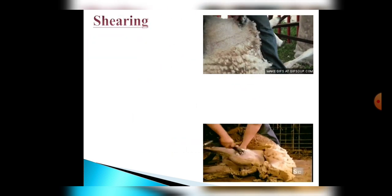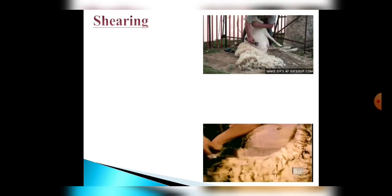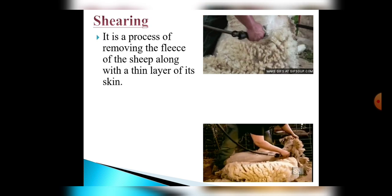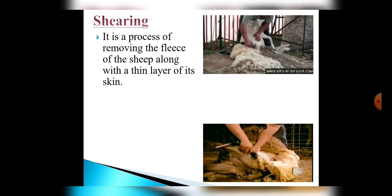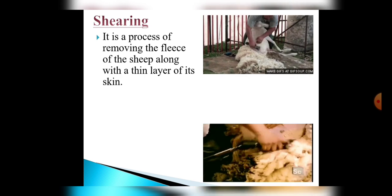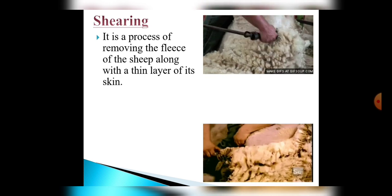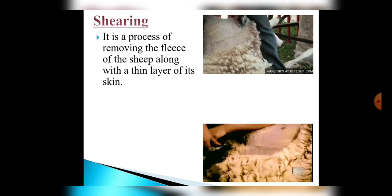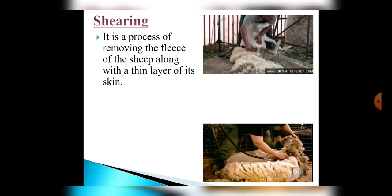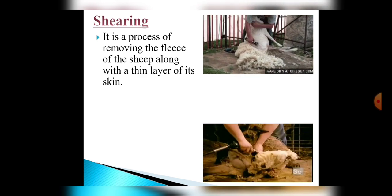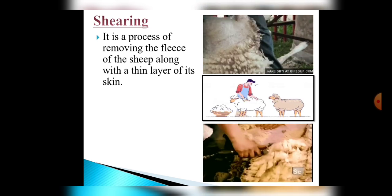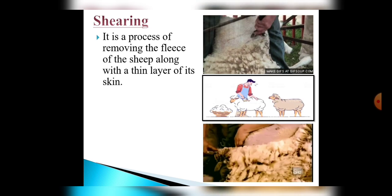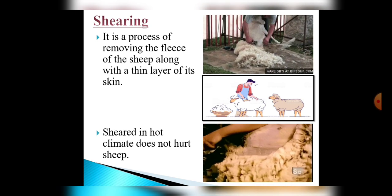The first step is shearing. As you can see in the given clip, this is the process of removing fleece of sheep along with a thin layer of its skin. In older days metal blades were used to trim the hair, but nowadays machines are used for this process. It is similar to getting a haircut or shave, and that's why shearing in hot climate does not hurt the sheep.